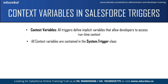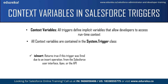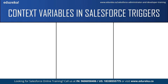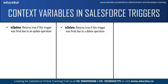The first context variable is isInsert — this returns true if the trigger was fired due to an insert operation from the Salesforce UI, Apex, or the APIs. For example: if Trigger.isInsert == true, only then the set of code will be executed. Next is isUpdate — this returns true if the trigger was fired due to an update operation. Next is isDelete — this returns true if the trigger was fired due to a delete operation.